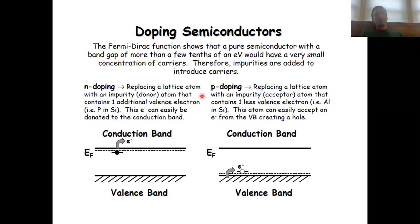When you n-dope, you replace a lattice atom with an impurity that has one additional valence electron. For instance, when you have silicon as your semiconductor and you replace a silicon atom with a phosphorus atom in your lattice, then you have n-doped it and you now have one additional electron available.